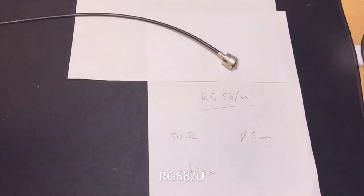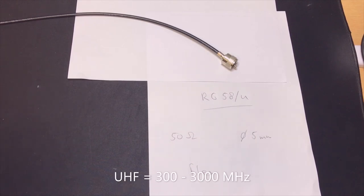This is the RG58U and this is also 50 ohms but it is a lot thinner so it is a lot more flexible. The losses on the VHF are more or less the same, it can take a little bit less power but since you probably use it for VHF and UHF you don't use kilowatts of power there so that is not a real issue.